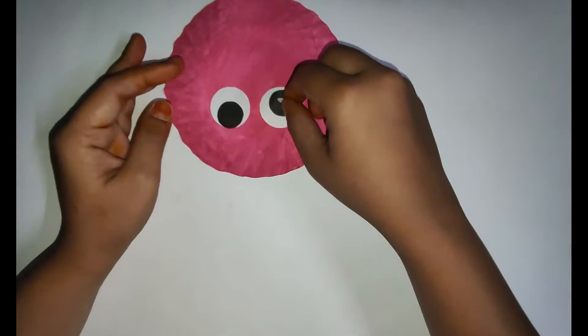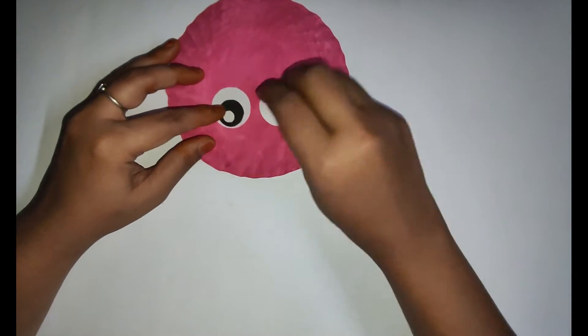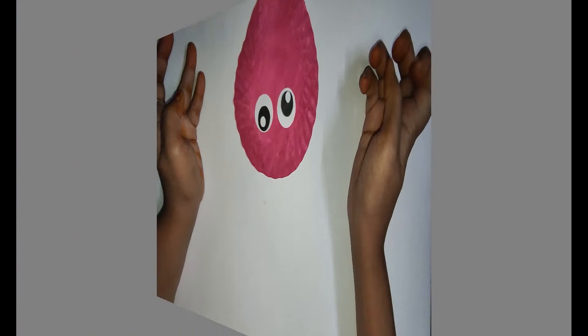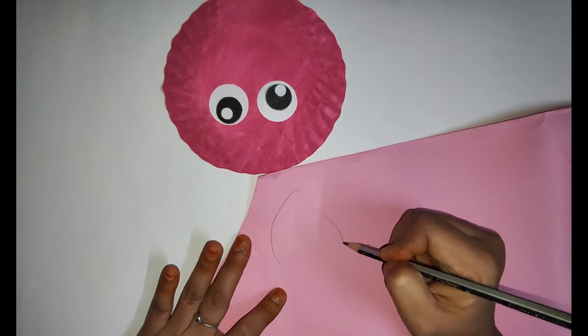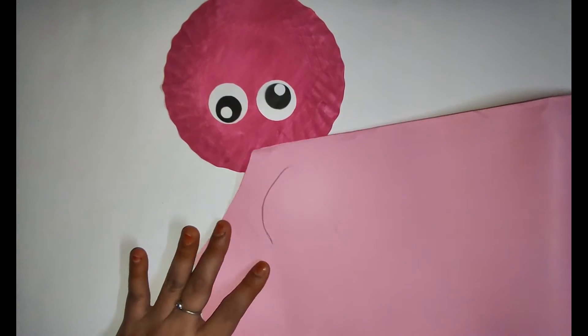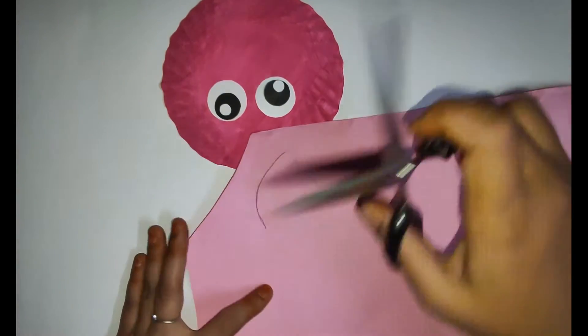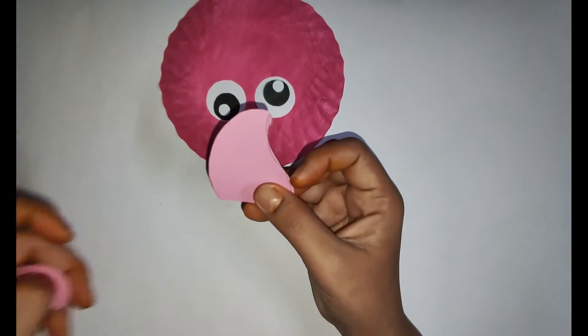Next, this will be the highlights inside the eyes. Next we'll take the pink color chart paper and draw the ears like this and cut it. Our pig's ears are ready.